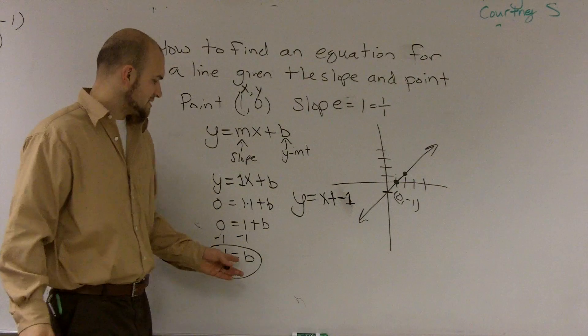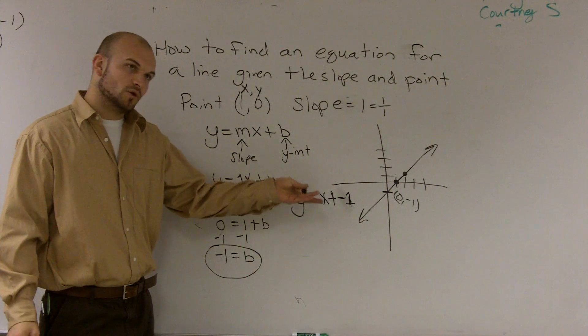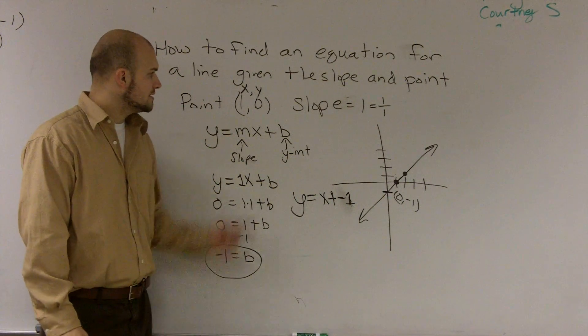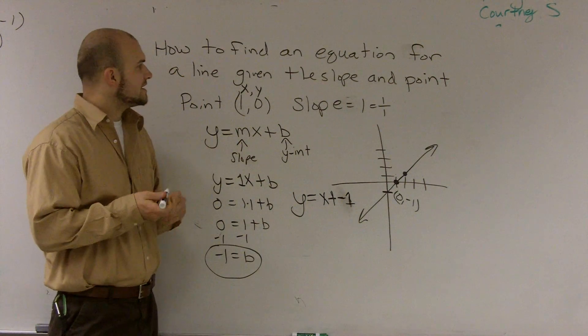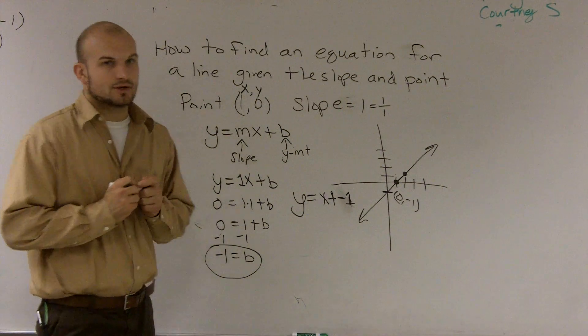Because my y-intercept is negative 1, and my slope is 1, which we don't always write in front of the x. So that's how you find an equation through a point given a slope.